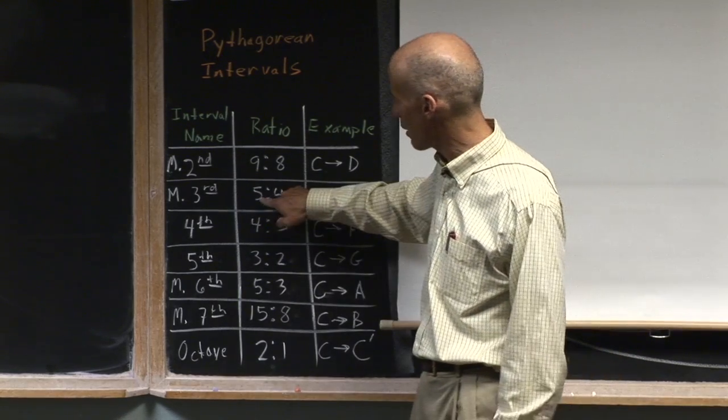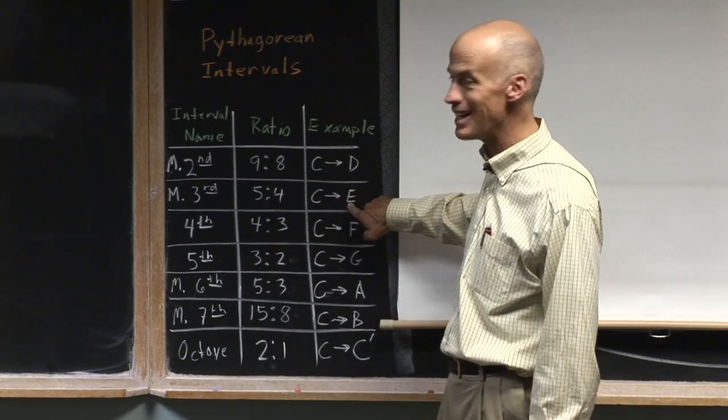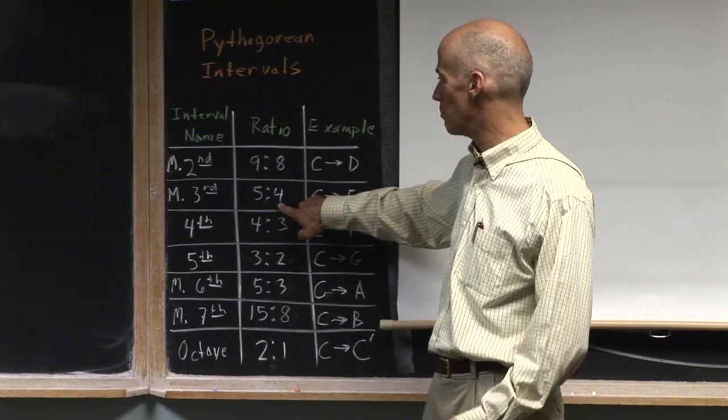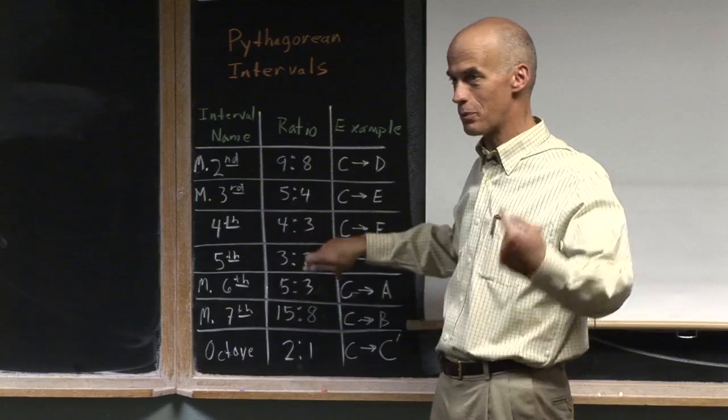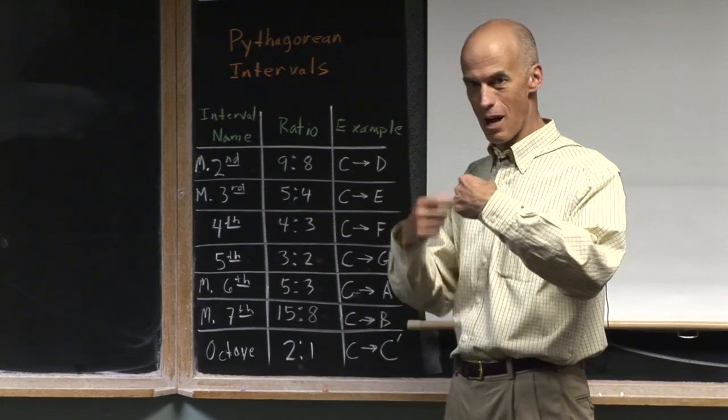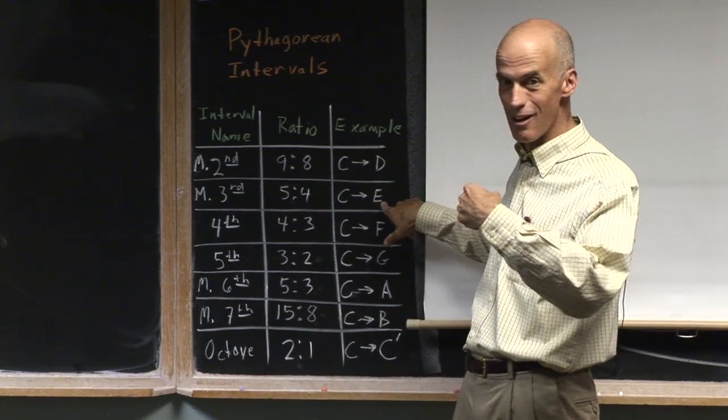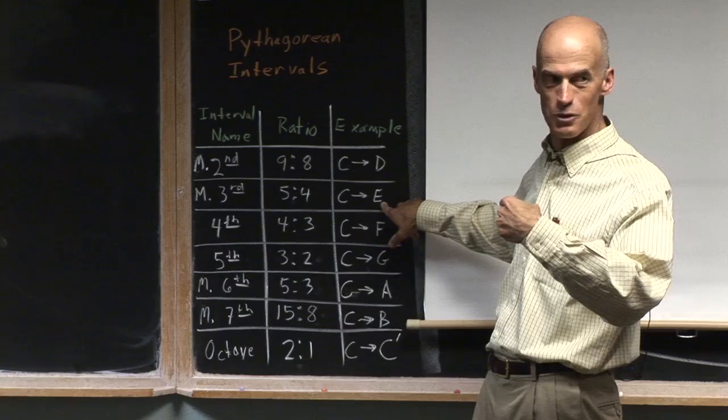These are all the intervals that I get if I were on a C string. I could actually calculate where I need to be to get certain notes. For example, if I wanted to get the major third, the E note on the C string, I'd multiply the length of the whole cello string by four fifths, press my finger there, measure it out, and I'm guaranteed to get an E.